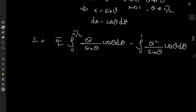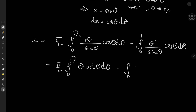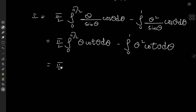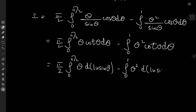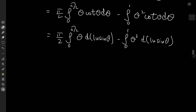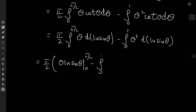We know that cos(θ)/sin(θ) is cotangent, so we have π/2 times the integral from 0 to π/2 of θ·cot(θ) dθ minus the integral from 0 to π/2 of θ²·cot(θ) dθ. And cotangent is the derivative of log(sin θ), so we write this as π/2 times the integral from 0 to π/2 of θ d(log sin θ) minus the integral from 0 to π/2 of θ² d(log sin θ).